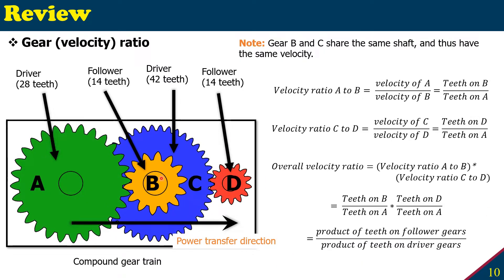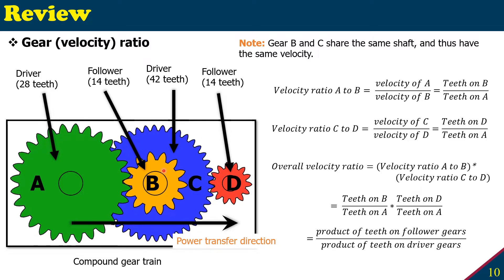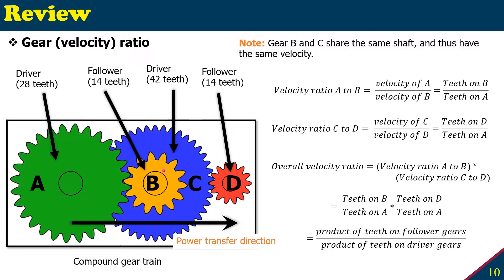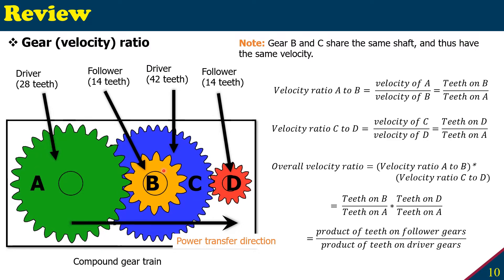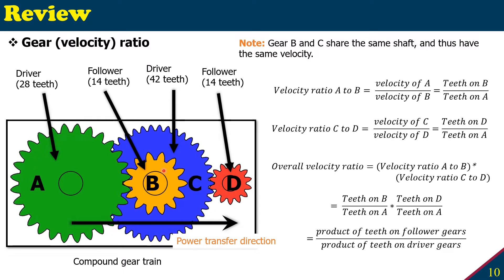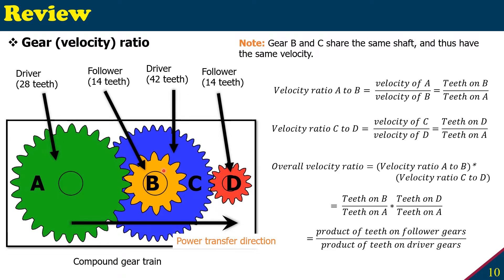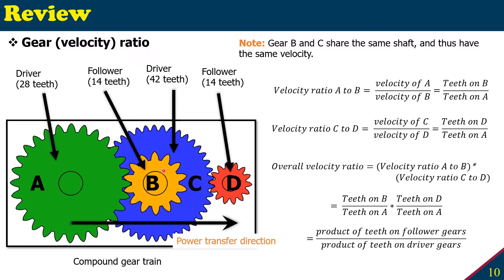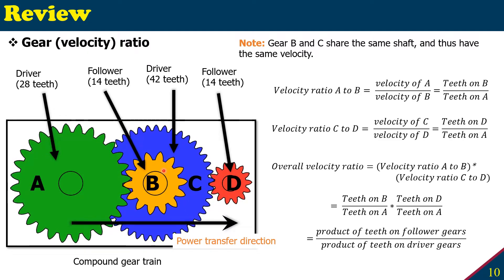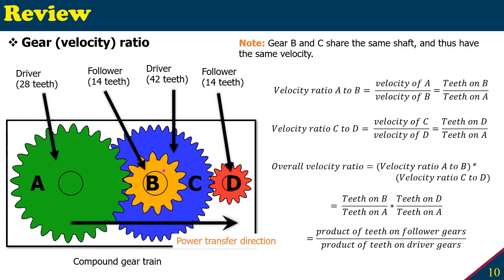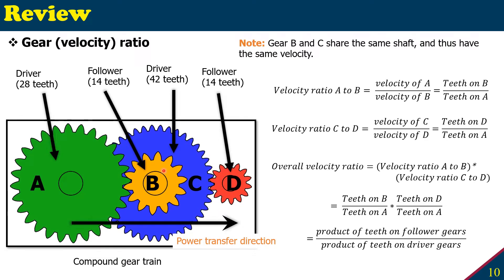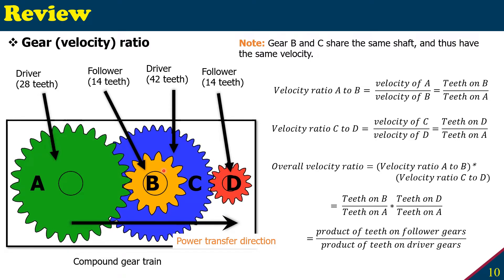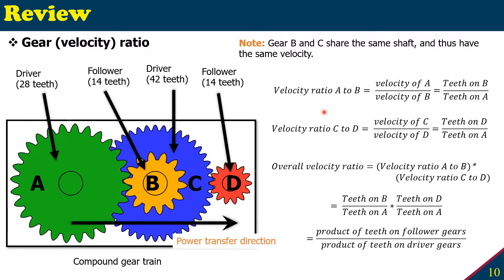Now let's see how to find the velocity ratio of a compound gear train. So far we've learned how to find the velocity ratio for a simple gear train. For a compound gear train, the formula remains the same, but unlike a simple gear train where the idler gear has no effect, in a compound gear train all the gears will have an effect.